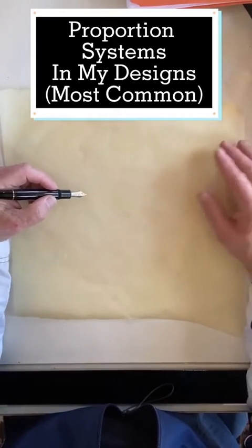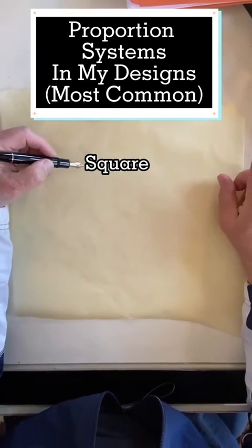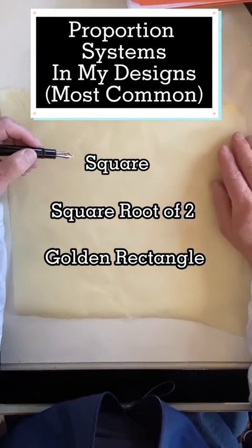I use three basic proportion systems in my work: the square, square root of 2, and the golden rectangle.